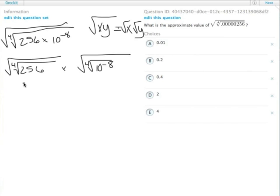So 256 is something to the fourth power, and it turns out that's 4, so we have the square root of 4. And then over here, remember when you raise powers to powers, the fourth root of something is the same thing as the one-quarter power. So this is actually 10 to the negative eighth, then 10 to the negative eight-fourths.